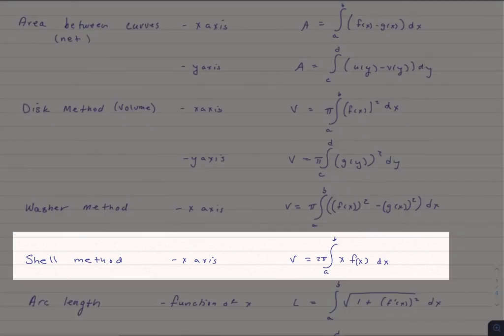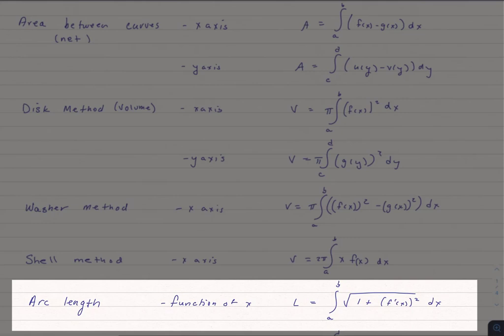We also talked about the shell method, where instead of slicing up a volume, we are peeling off shells. Then we switched from volume to talk about arc length.